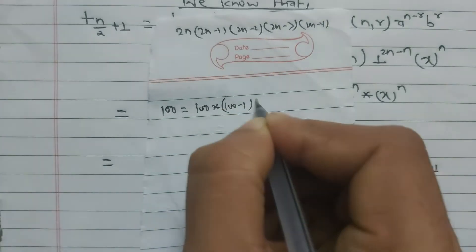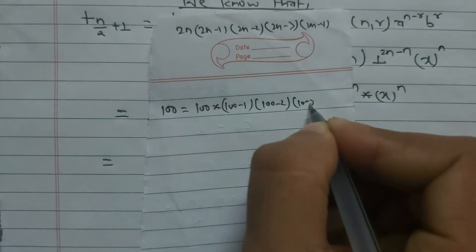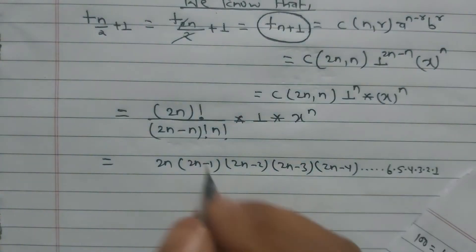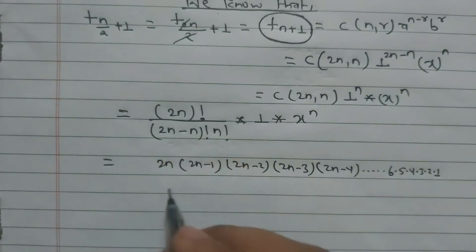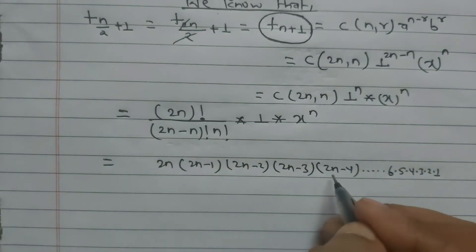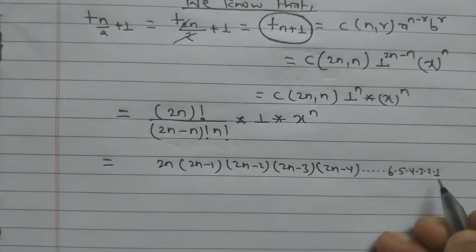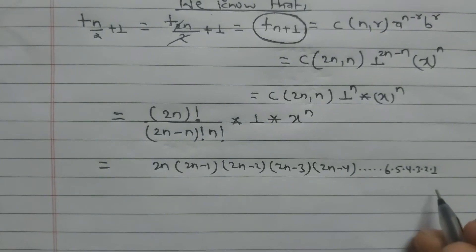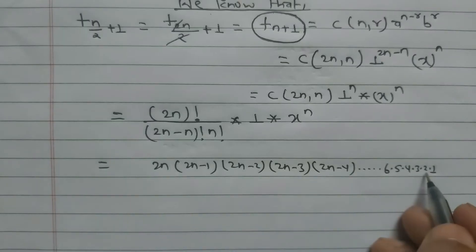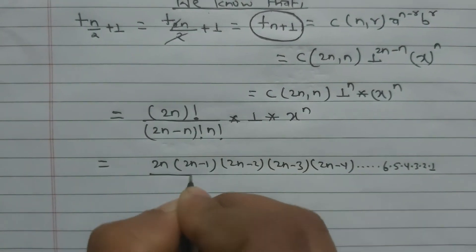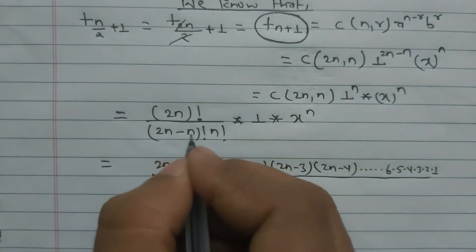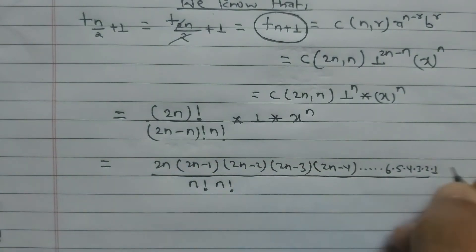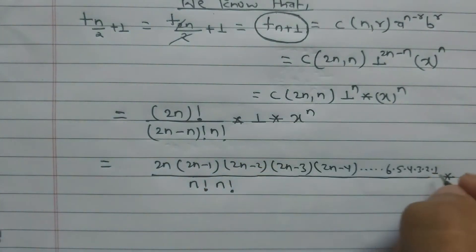To clarify: just as 100! = 100·99·98·...·3·2·1, similarly (2n)! = 2n·(2n−1)·(2n−2)·(2n−3)·(2n−4)·...·1. Also, (2n−n)! = n!, so the denominator becomes n!·n!. We keep 1·x^n as needed for the proof.